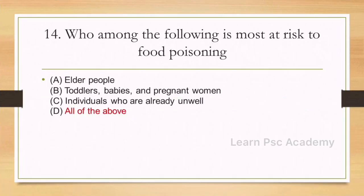Next question: who among the following is most at risk of food poisoning? Options: elderly people, babies, pregnant women, individuals who are already unwell, all of the above. Correct answer is all of the above.